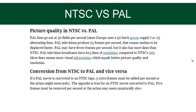PAL television broadcasts have 625 lines of resolution compared to NTSC which has 525. More lines means more information, which equals better picture quality and resolution. If a PAL movie is converted to NTSC, 5 extra frames have to be added per second to remove jerk. The opposite is true for NTSC converted to PAL — 5 frames must be removed per second or the action may seem unnaturally slow.